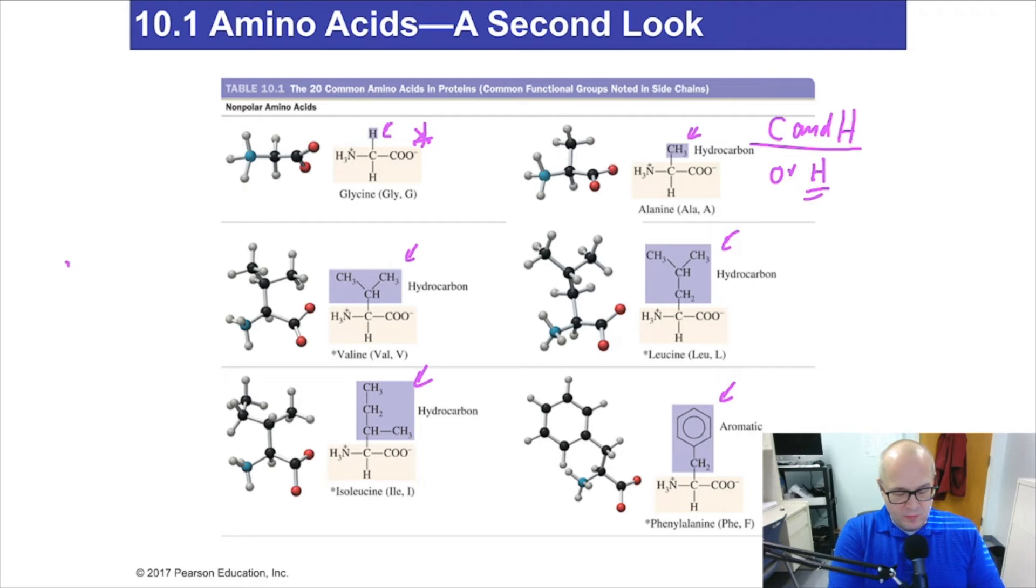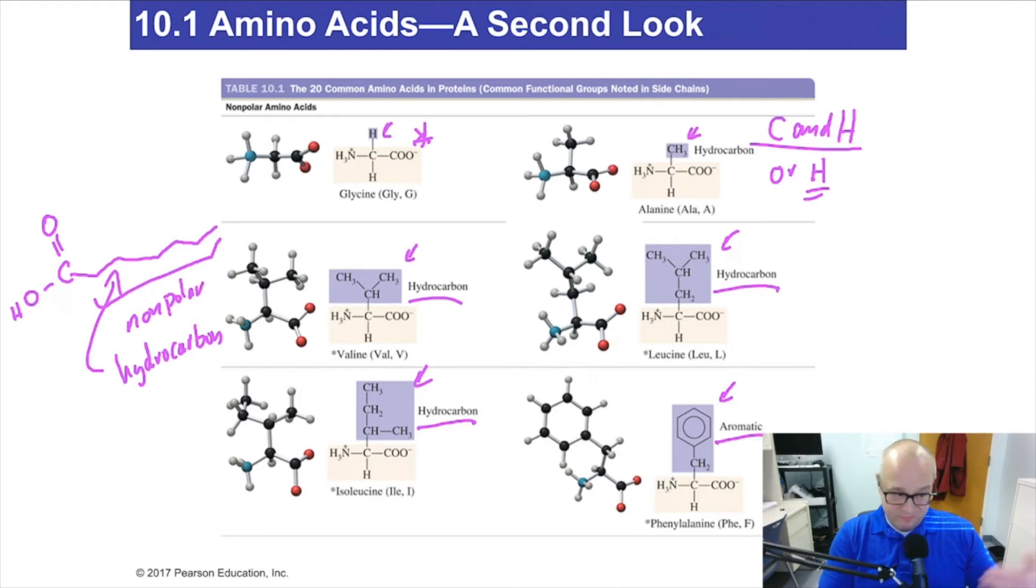For the most part, all of the nonpolar amino acids are hydrocarbon R groups. They're called nonpolar. Recall, when we worked with fatty acids, this was nonpolar. It's a hydrocarbon. So this is nonpolar. It's a hydrocarbon. This is a hydrocarbon. This is aromatic, another form of hydrocarbon. They're all hydrocarbons except for hydrogen. They're all nonpolar. Nonpolar means you're a hydrocarbon R group.